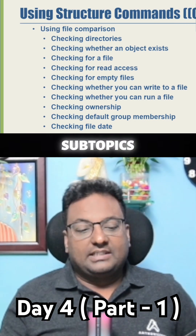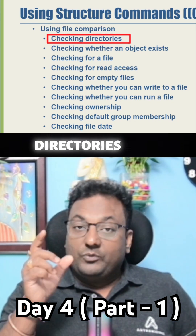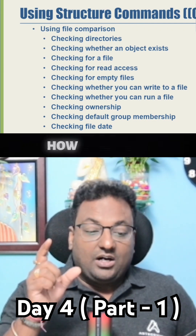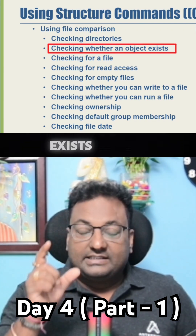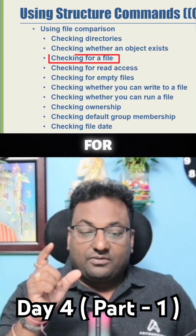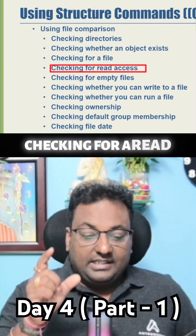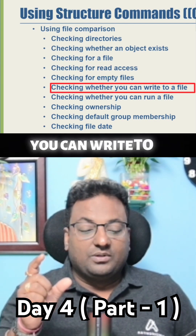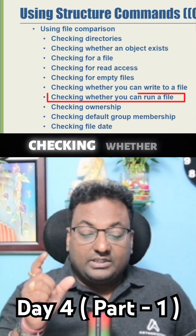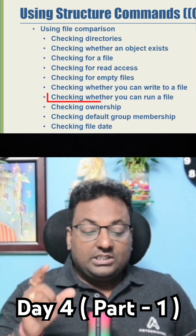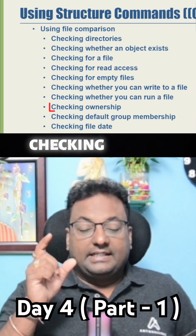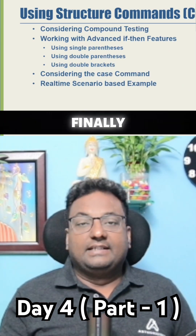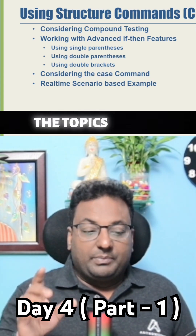Under the file comparison subtopic, we have additional subtopics: checking directories, checking whether an object exists or not, checking for a file, checking for read access, checking for empty files, checking whether you can write to a file, checking whether you can run a file, checking ownership, checking default group membership, and checking file data.